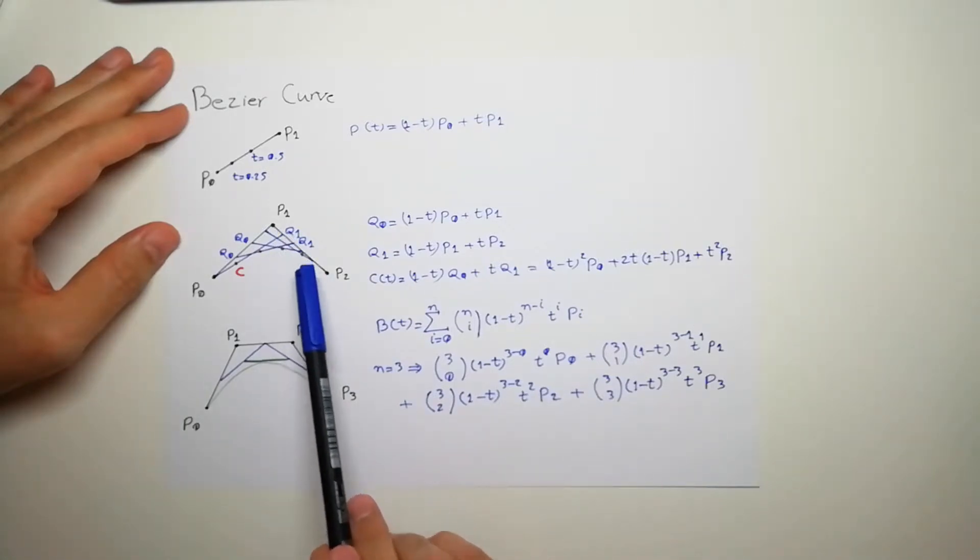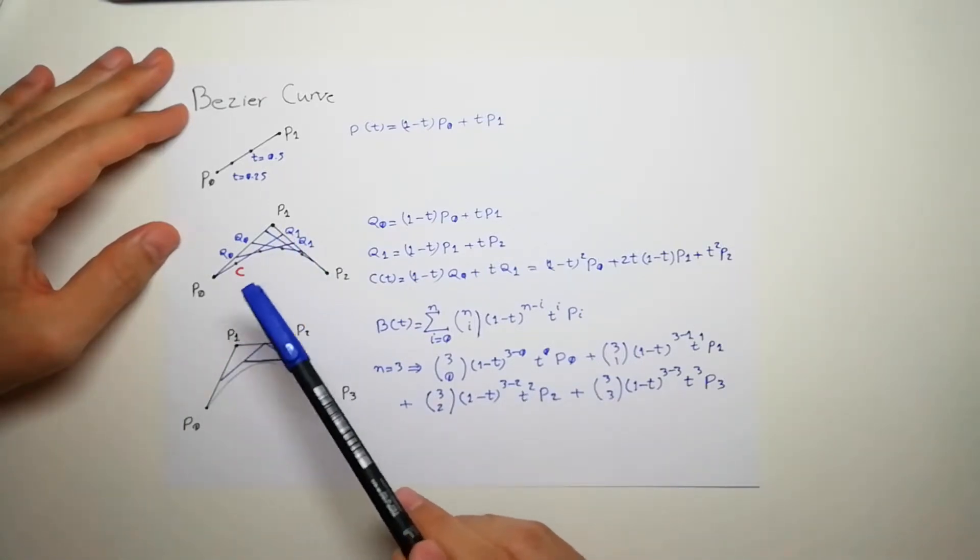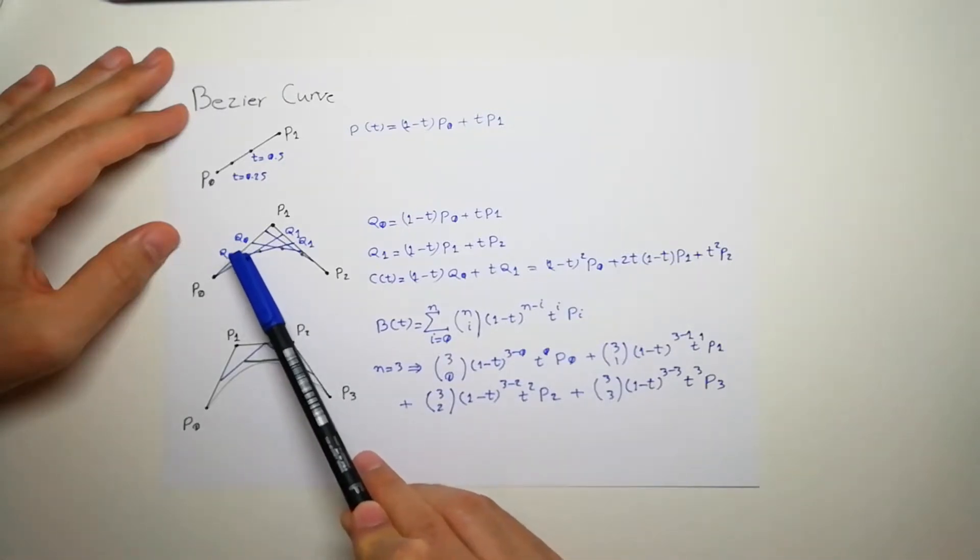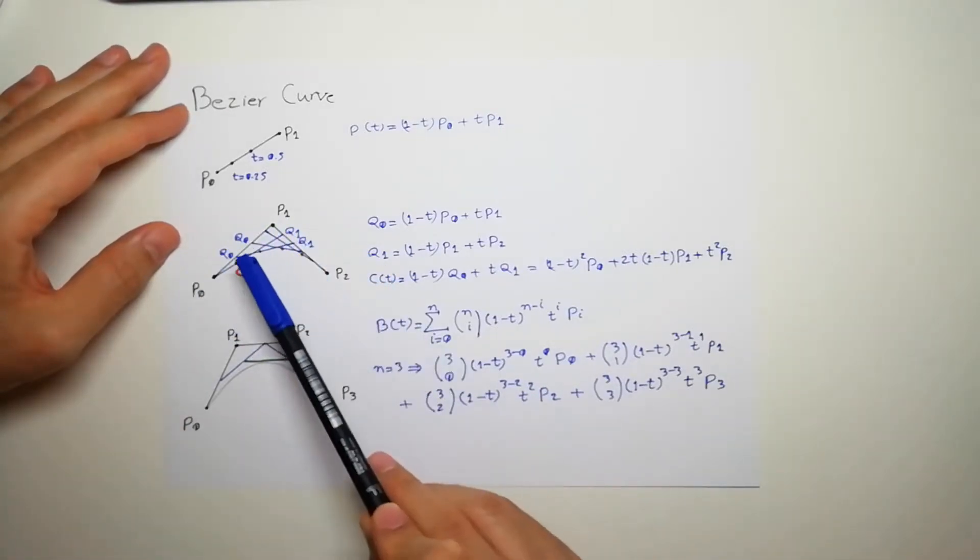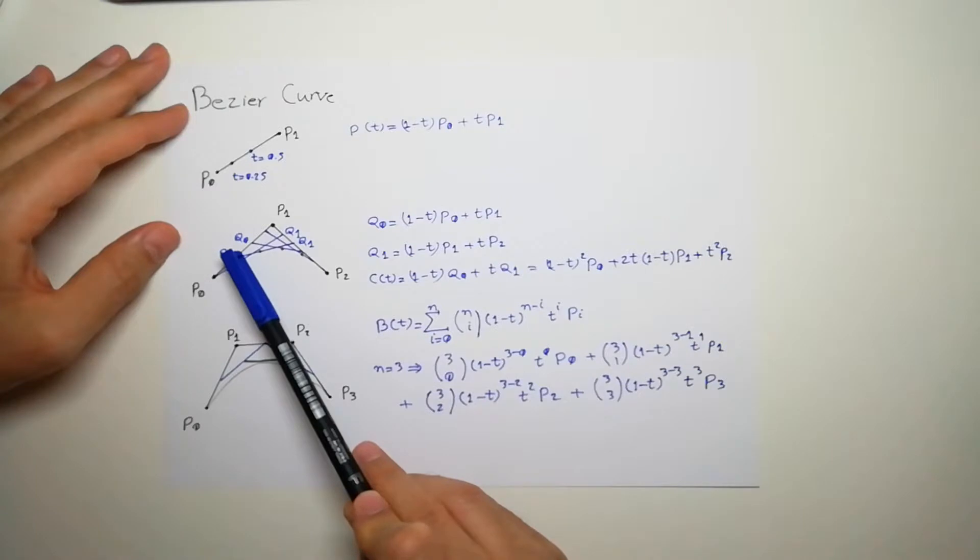Now let's draw the line between these newly extracted q0 and q1. So I choose a t, let's say I don't know, 0.3. I will get this q.